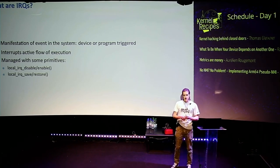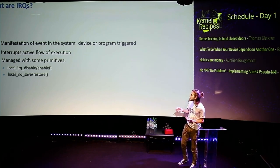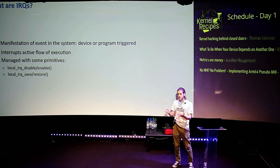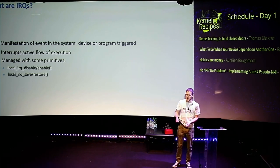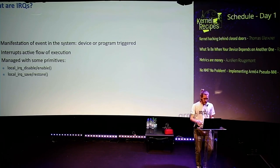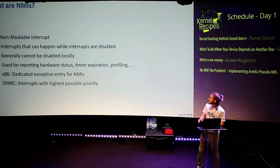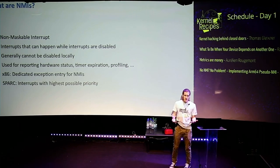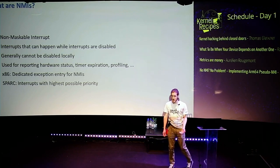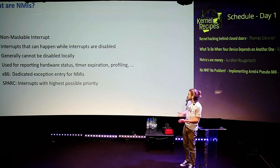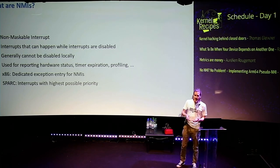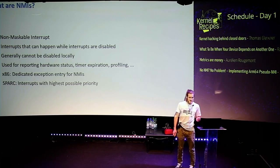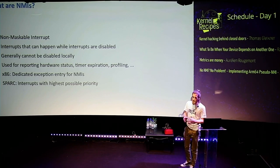Because this interruption of the normal flow of execution can be a bit annoying, we have some primitives in the kernel that allow you to enable and disable interrupts, so that when you're doing something important and you don't want to be bothered by an interrupt, you can just say no. So now that we have that, we also have non-maskable interrupts — basically an interrupt that can still happen when we decided to disable interrupts. They can be used for debugging, error handling, reporting hardware status, having some timers that we don't want to miss, and things like that.